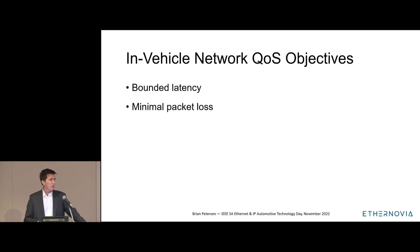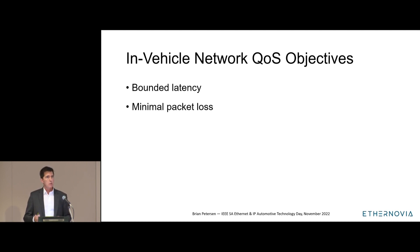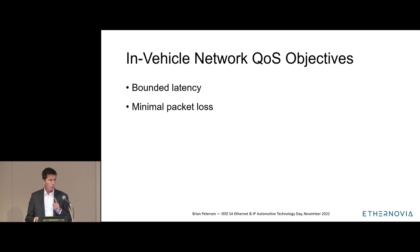A couple of the objectives of QoS in in-vehicle networks is to bound latency and to minimize packet loss. We're not trying to bound latency to zero or establish zero jitter — we just want to make sure that the latency does not exceed some upper limit. With regards to packet loss, we're not trying to eliminate all possible causes, but there is one particular cause that we can address very effectively.